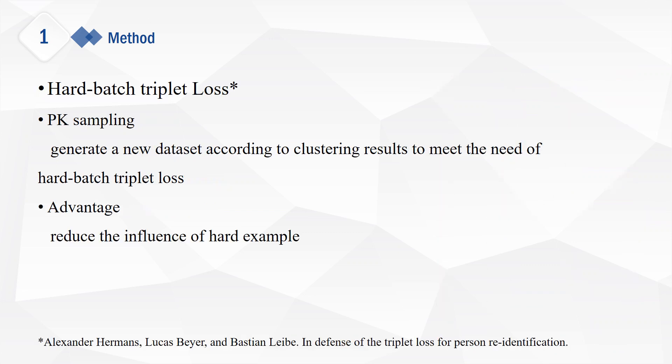Hard-batch triplet loss uses PK sampling to generate a new dataset according to clustering results. It can better distinguish hard examples.